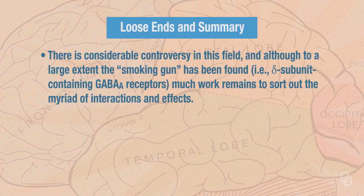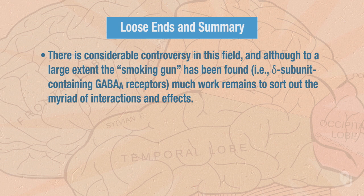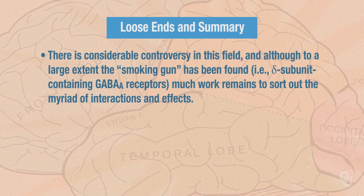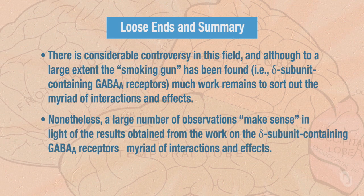We're ready to tie together some loose ends and summarize our discussion. Different regions of the brain were known to be affected by ethanol, but initial work was unsuccessful in isolating a particular receptor that responded to ethanol at physiologically relevant concentrations. More recent work found a particular type of GABA-A receptor that contains a delta subunit, which was shown to respond to ethanol at physiologically relevant concentrations. Although there is considerable controversy in this field, and much work still remains to sort out the myriad of interactions and effects, a large number of observations make sense in light of the results obtained from the work on the delta subunit-containing GABA-A receptors.